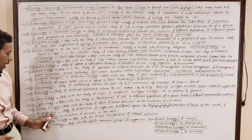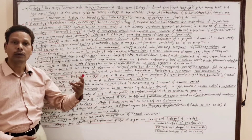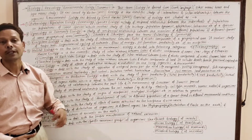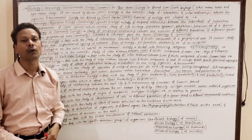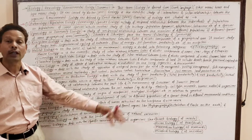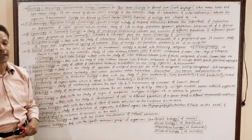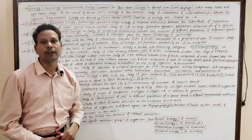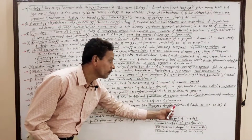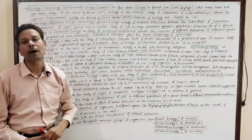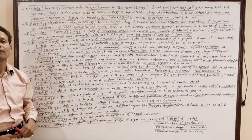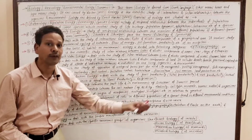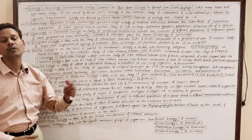The next branch is biogeography, meaning the distribution of organisms — distribution of plants, animals, and microbes on different parts of the earth and different geographical areas. It may be divided into phytogeography, which is the study of distribution of plants on different parts of earth, and zoogeography, which is the distribution of animals on different parts of earth.